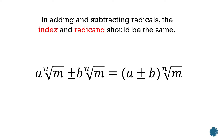First, we need to check that the indices should be the same. Second, the radicands should be the same. If we see that those two are the same, then we can add or subtract the coefficients — the a and b.